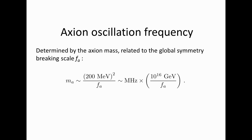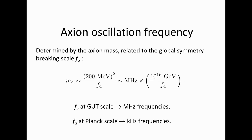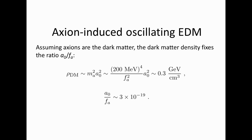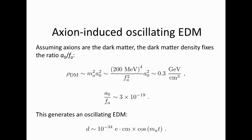The frequency is set by the axion mass — megahertz frequencies for a GUT-scale axion, kilohertz for a Planck-scale axion. The CASPER electric experiment concentrates on very light, low-mass axions with a high Peccei-Quinn scale. If axions constitute all the dark matter, this fixes the oscillation amplitude, and the expected EDM is about 10 to the minus 34 e-centimeters oscillating at the Compton frequency. This necessitates the need for precision.